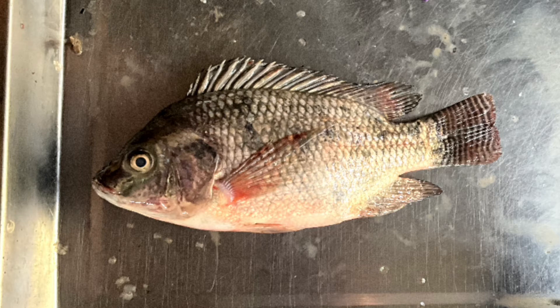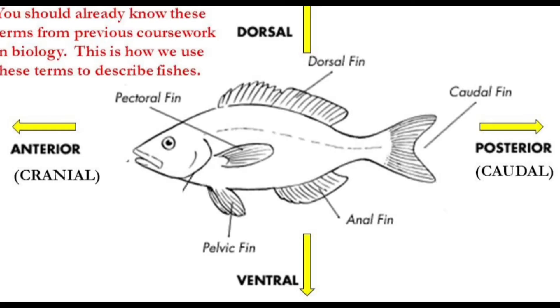Ventral describes the lower side or belly of the fish. The pelvic and anal fins are typically located on the ventral side. Anterior refers to the front or the head of the fish. The mouth, eyes, and gills are located on the anterior part of the fish.